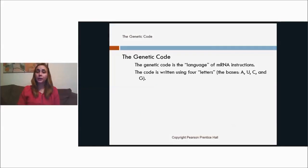So the genetic code is the language of mRNA instructions, and the code is written using the bases A, U, C, and G. This code is universal among organisms. DNA is a universal code among all organisms. Hey, if it ain't broke, don't fix it. So once something works, evolution tends to keep using that same process if it works.